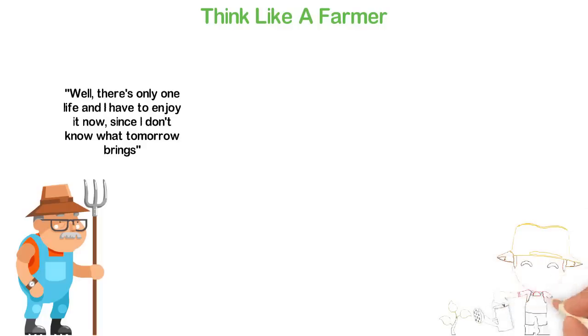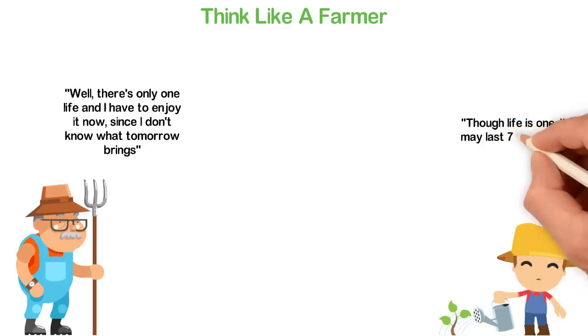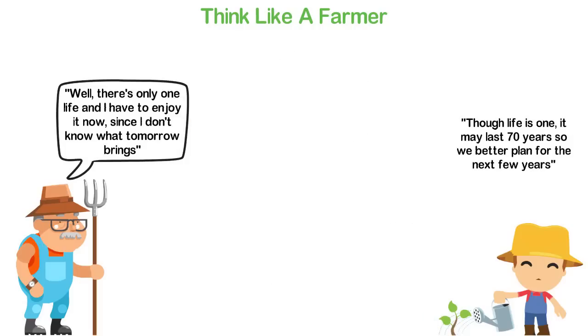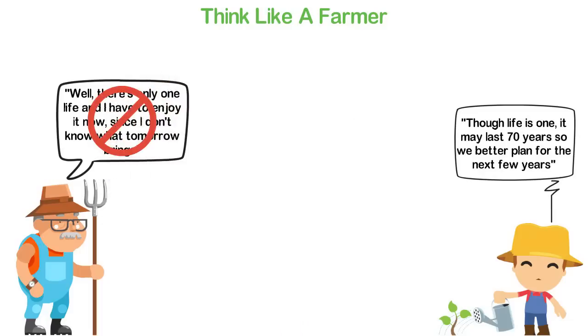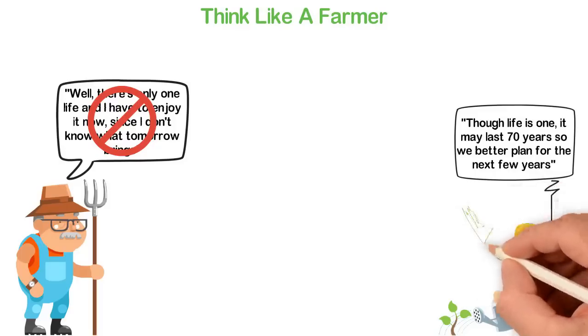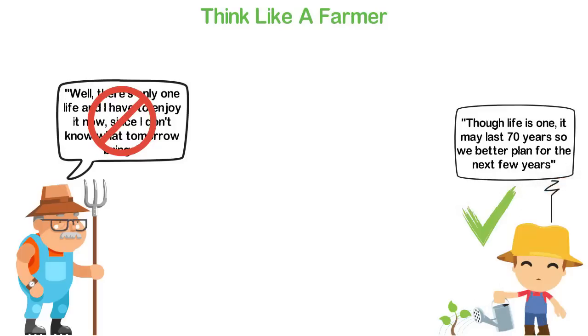The second farmer told himself, though life is one, it may last 70 years, so we better plan for the next few years. He ate half of his corn too, but he kept the other half to be planted the next farming season. When the next harvest season came, the first farmer had nothing to harvest because he planted nothing, while the second farmer had 500 folds of what he harvested the previous year. Now he could eat all he wanted and marry a new wife with ease.